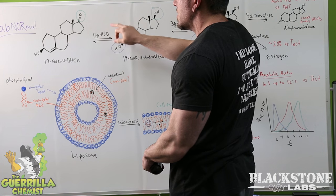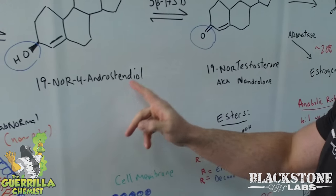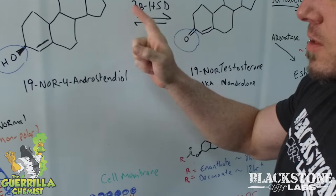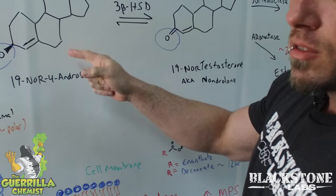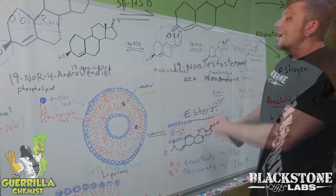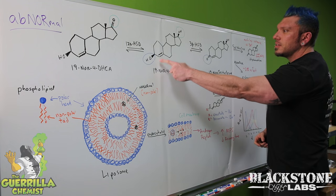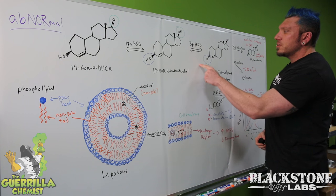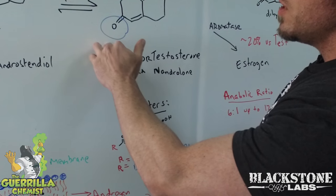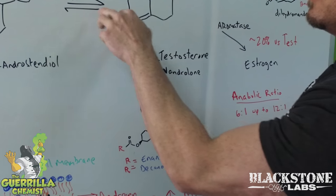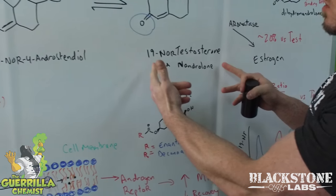That turns this compound into 19-nor-4-androstenediol. This compound actually used to be available on the market and was pretty potent on its own. Now, nor-androstenediol goes through the enzymatic reaction that takes this hydroxyl group and converts it into the necessary ketone so that it can bind to the androgen receptor via the enzyme 3-beta hydroxy steroid dehydrogenase. Now we have the active compound, which is 19-nortestosterone.